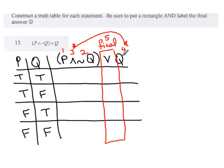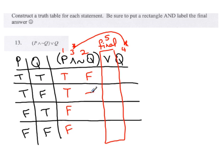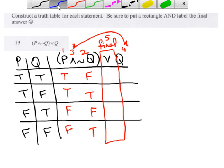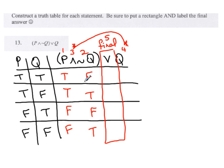Once you have your plan, it's just a matter of filling it in and knowing the rules. Column one is P: true, true, false, false. Column two is not Q. Q is true, false, true, false — so not Q is the opposite: false, true, false, true. It helps to use different color pens or pencils.